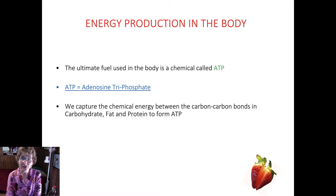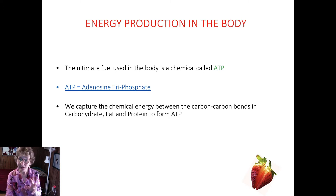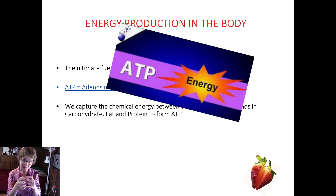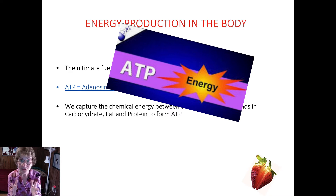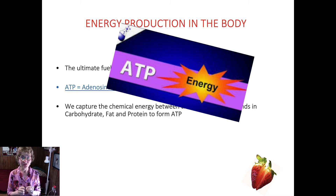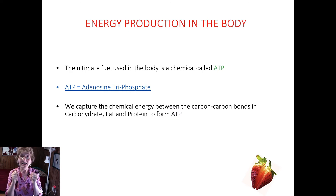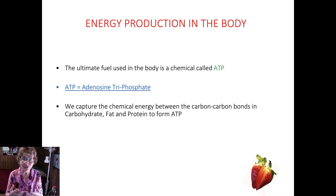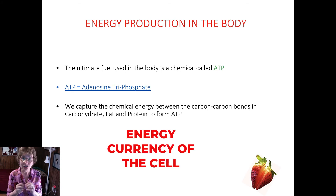The ultimate fuel used in our body is a chemical called ATP, or adenosine triphosphate. We capture chemical energy between the carbon-to-carbon bonds of proteins, carbohydrates, and fats, and that's what forms ATP. When we metabolize carbohydrates, proteins, and fats and those bonds are broken, that ATP is released. That's the energy that powers every reaction in our body — muscle contraction, nerve impulse transmission, heart beating. ATP is the energy currency of the cell.